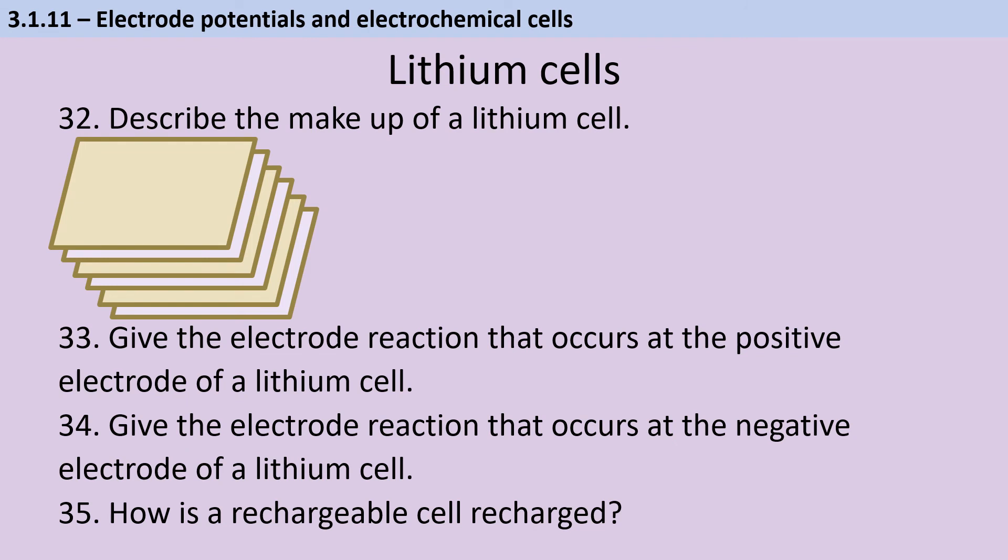Now, even if you skipped over the last couple of questions, because those are cells that are not specifically named in your specification, the lithium cell is specifically named. So you do need to know about this one. So the first thing about lithium cells is that they have quite an interesting electrolyte in that it's not actually a liquid or a gel, it's a polymer. And this has a couple of big advantages. One is that because it's not a liquid, it's not going to leak out. And the other is that because it's not in any way aqueous, it's not going to react with the lithium, which is obviously a really reactive metal because it's in group 1.